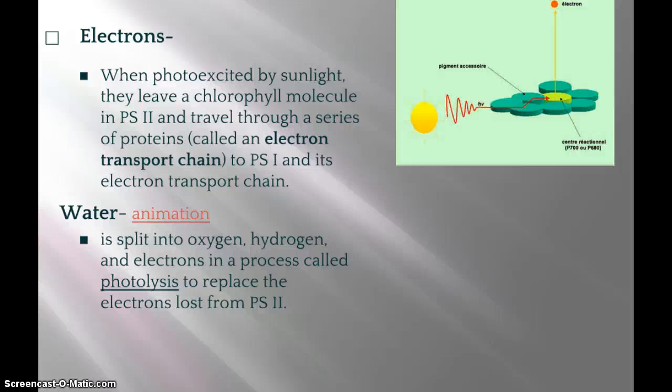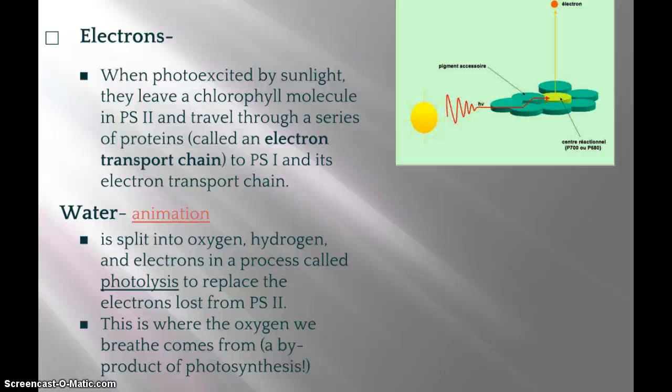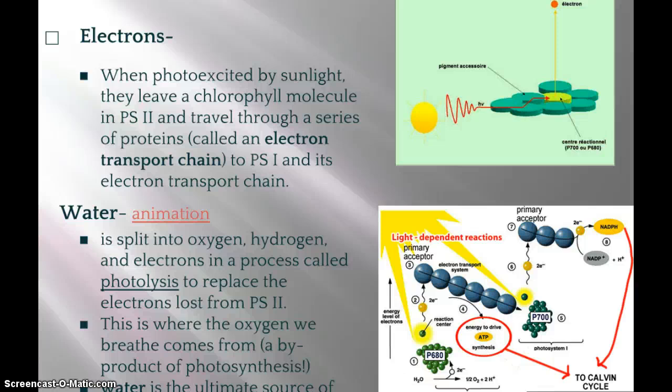Water is also really important — it's one of the reactants of photosynthesis. It gets split into oxygen, hydrogen, and electrons through a process called photolysis — 'lysis' means splitting, 'photo' means Sun. It replaces the electrons that get excited. When sunlight excites those electrons, photosystem 2 wants them back, so it splits water and steals electrons from it, leaving behind hydrogen ions and oxygen gas — that's where we get the oxygen we breathe.